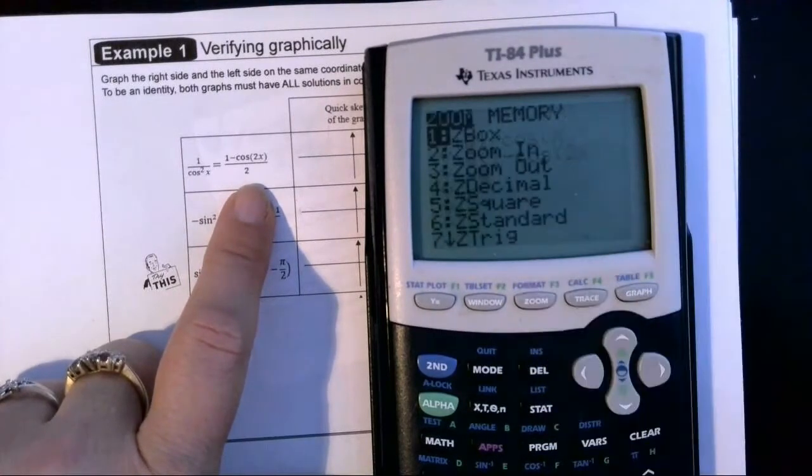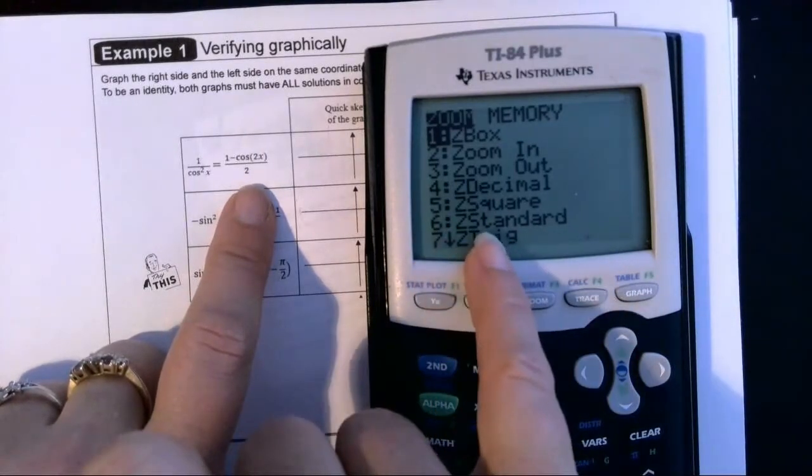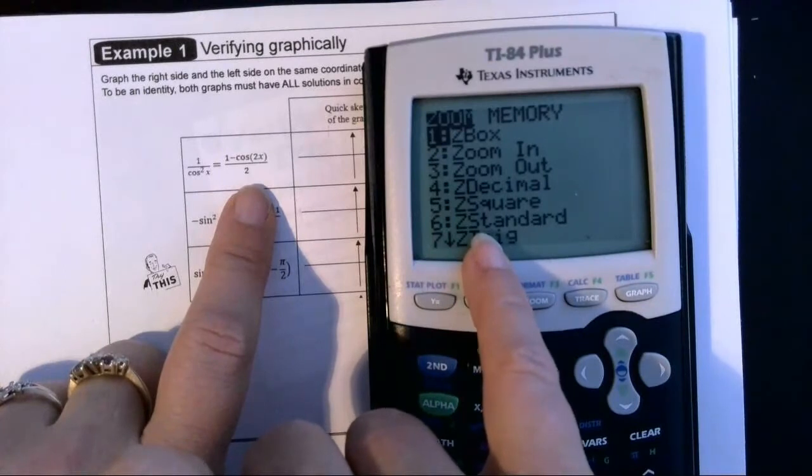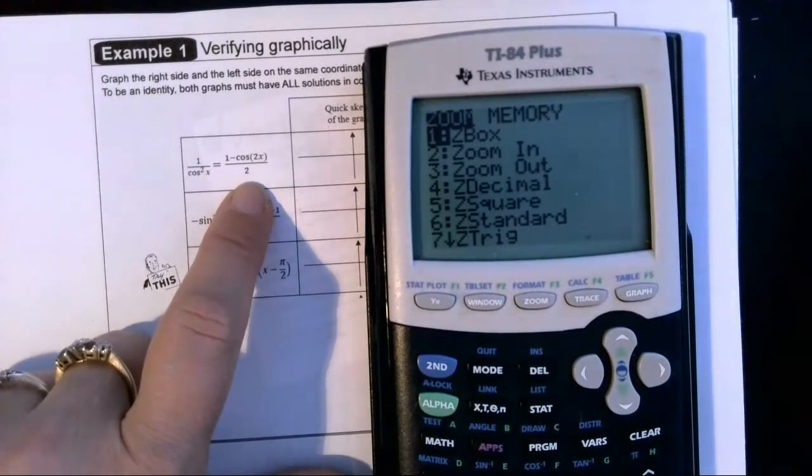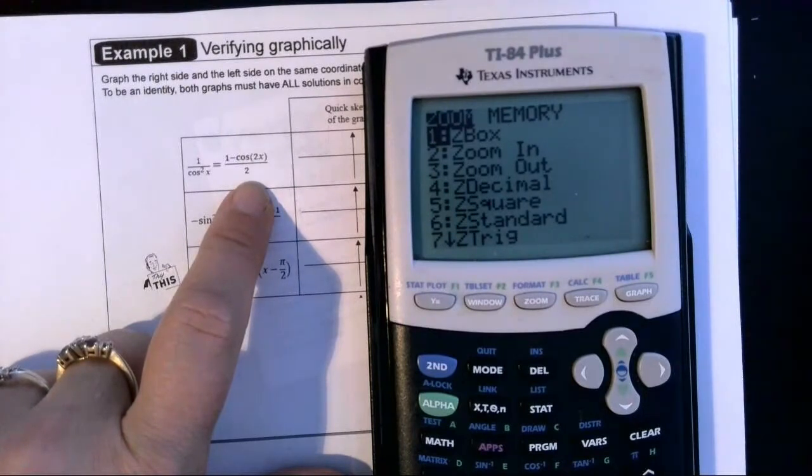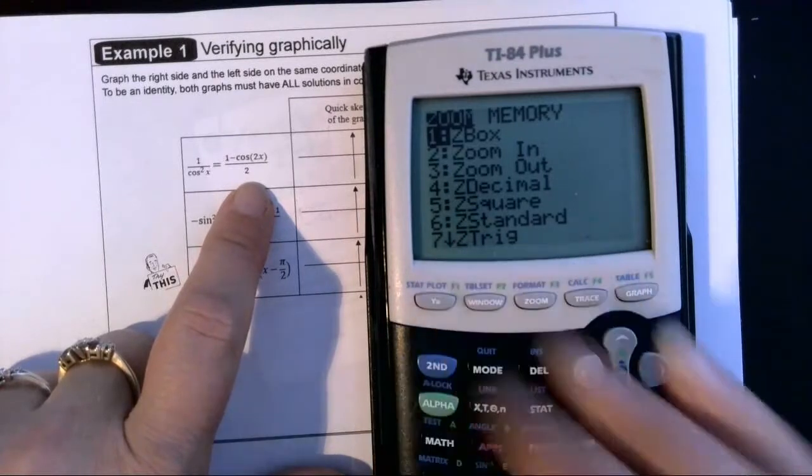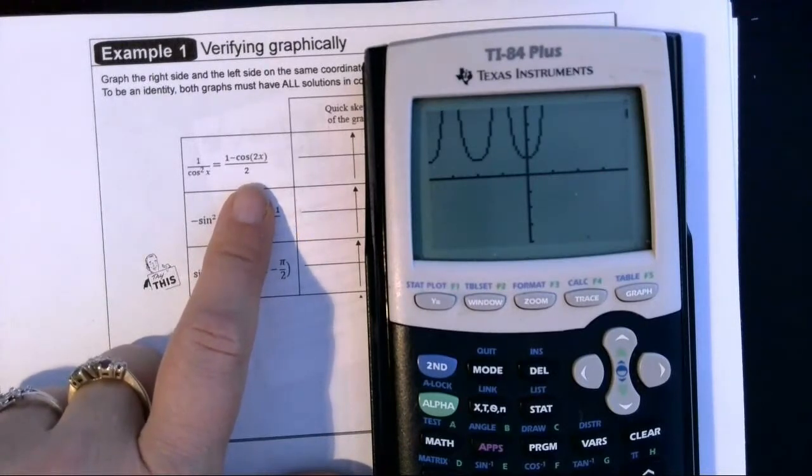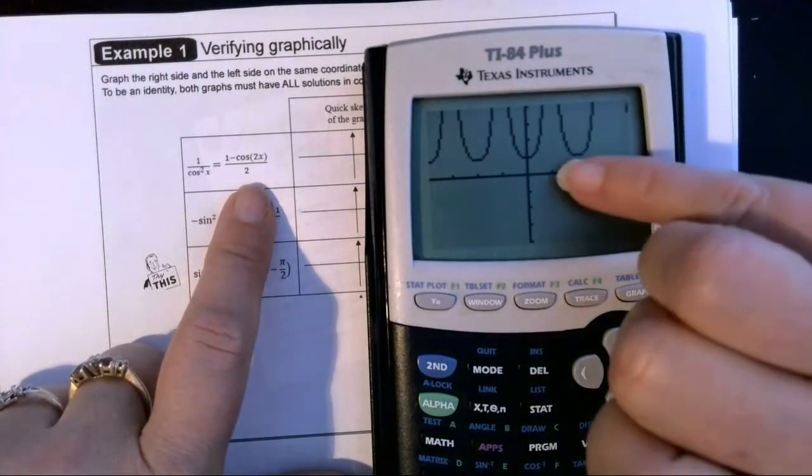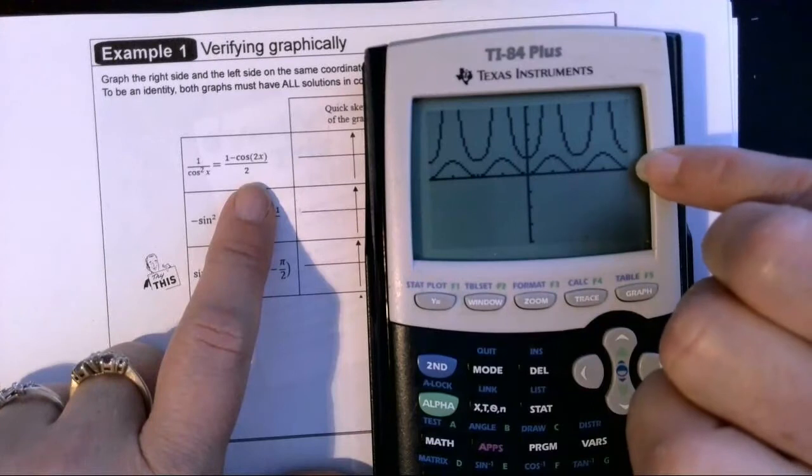And when you press zoom, in our algebra graphs we would always use zoom 6, zoom standard, to get a window going from negative 10 to 10. But since we're going to be graphing in radians and we want our increments to be the quadrantal angles, the pi over 2, pi, 3 pi over 2, 2 pi, we're going to go ahead and do number 7 here, this zoom trig. And that will automatically set our window so that each of these tick marks is a quadrantal angle. So this is pi over 2, pi, 3 pi over 2, 2 pi.